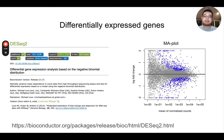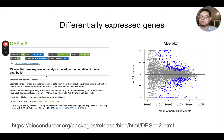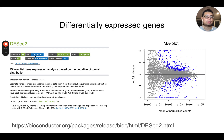After principal component analysis, we can use DESeq2 for differential gene expression analysis. This is a statistical model based on the negative binomial distribution. You can see in Bioconductor there are over 2,000 packages, and DESeq2 is one of the top 25, so it's quite popular.